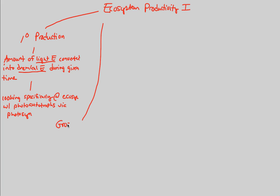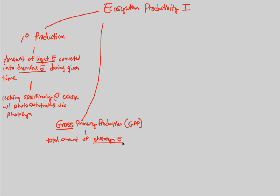We use two basic components to measure primary production. First is gross primary production, usually referred to as GPP. In gross primary production, we measure the total amount — and whenever you think 'gross,' that means total — of photosynthetic energy that is being captured during a particular time.